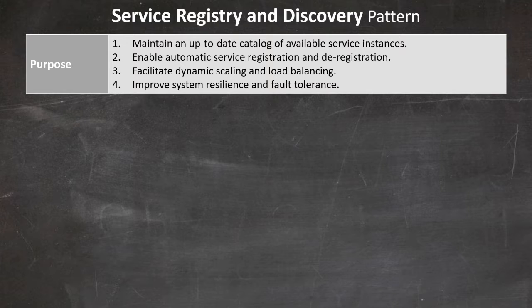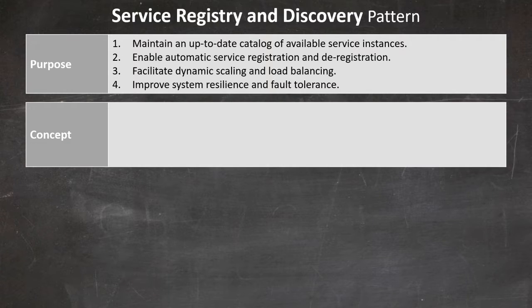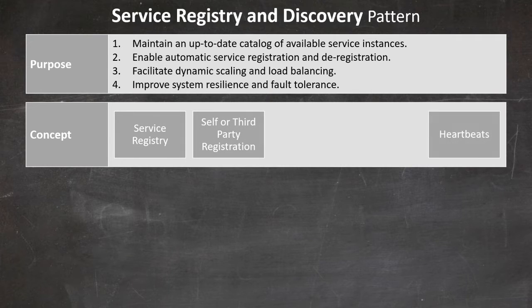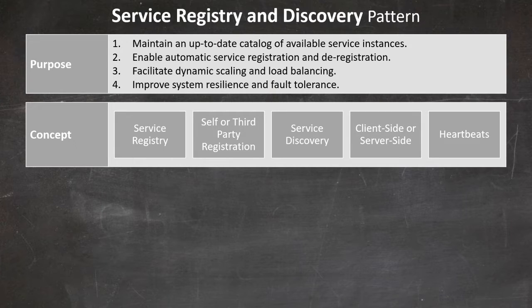At a 50,000 feet view, this pattern involves two main components. First, a service registry, which can be described as a database that stores information about available service instances, including their network locations. A service can either self-register at startup or rely on a third party that leverages the service's heartbeats. The second component is service discovery, which is the mechanism by which a service can find the other services it can interact with. There are two discovery approaches: client-side and server-side.